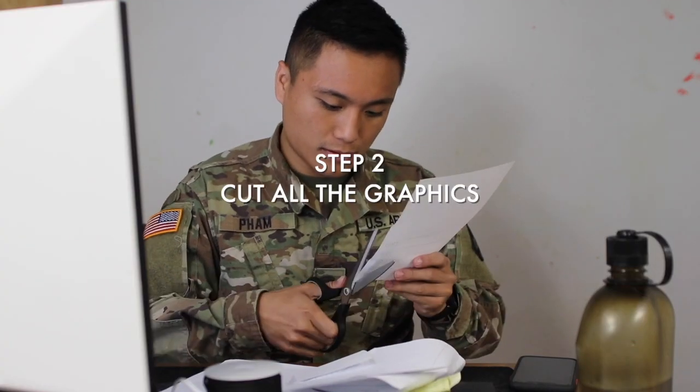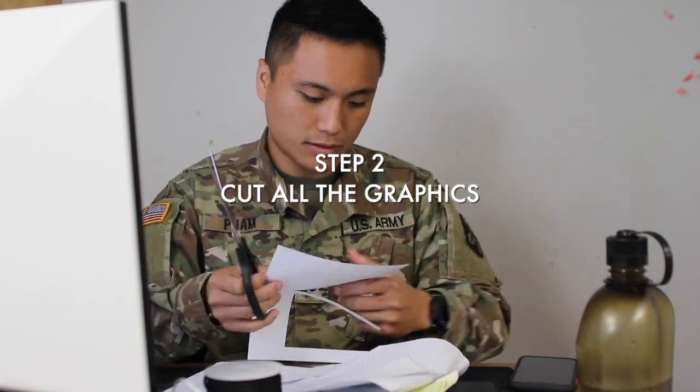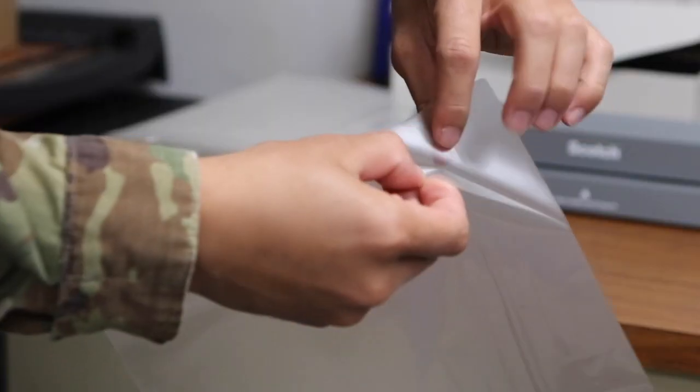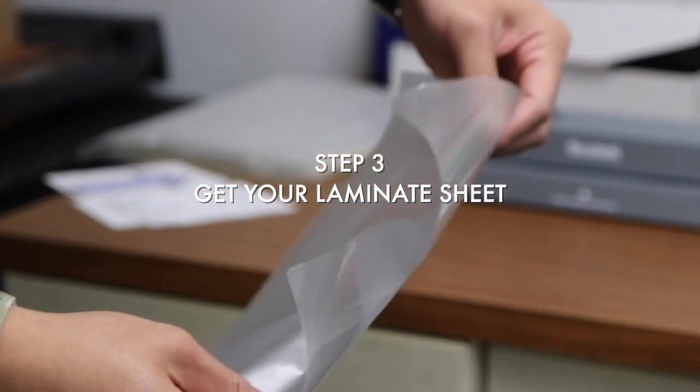Step two, cut out all the graphics. This part is really simple and you can have your little cousin do it for you. Step three, get your laminate sheet.